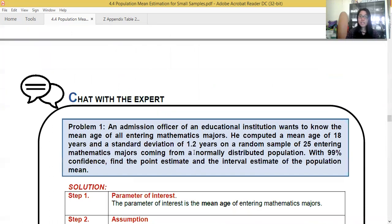An admission officer of an education institution wants to know the mean age of all entering mathematics majors. He completed a mean age of 18 years and a standard deviation of 1.2 years on a random sample of 25 entering mathematics majors coming from a normally distributed population. With 99% confidence, find the point estimate and the interval estimate of the population mean. Now let's start. Step one, parameter of interest. What is the problem all about? It's in the problem. It's about the mean age. So you just say, it's the mean age of entering mathematics majors.